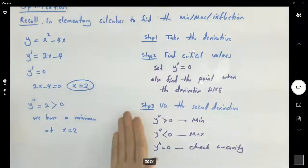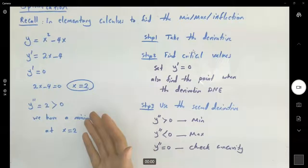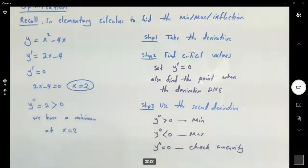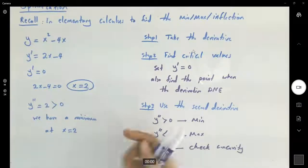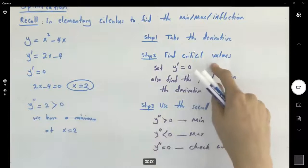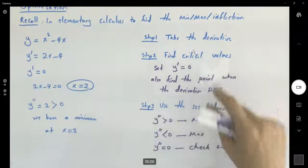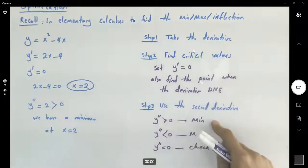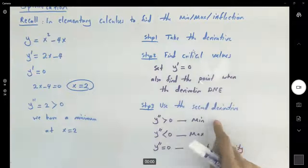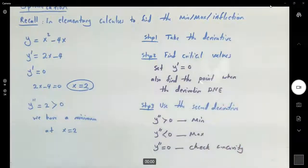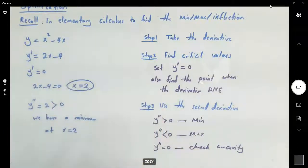This is what we did in elementary calculus. Now, in two-variable functions, we need to find the critical values and try to analyze them using the second derivative. But now they have the derivative with respect to x and the derivative with respect to y. We're going to construct something that we call the Hessian and then use that to analyze the behavior of the function.